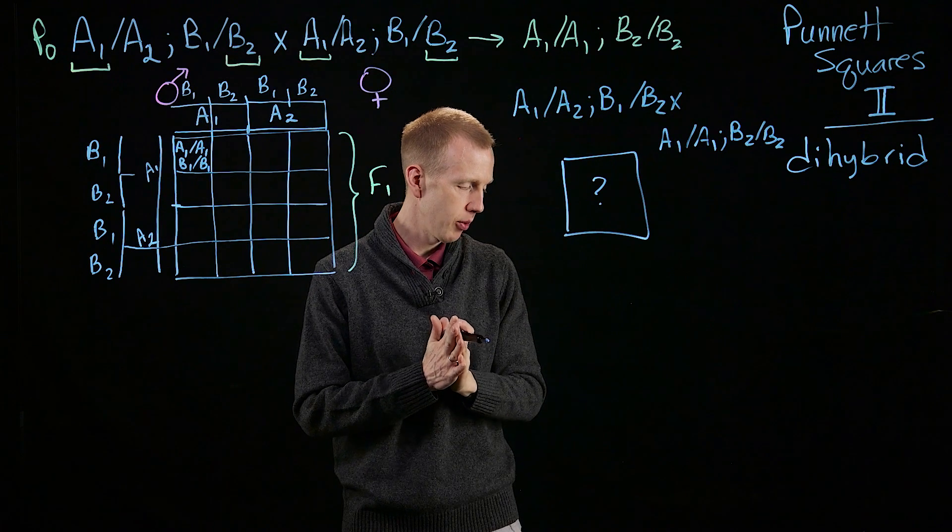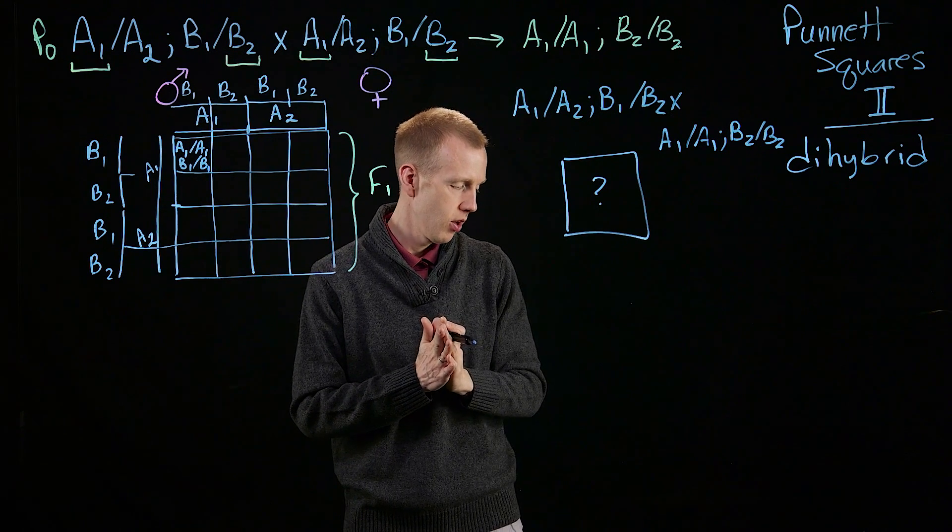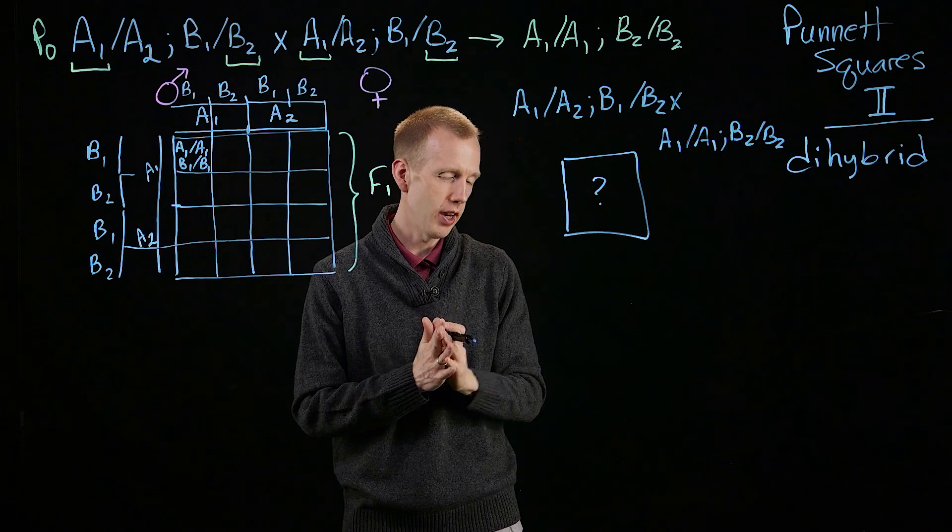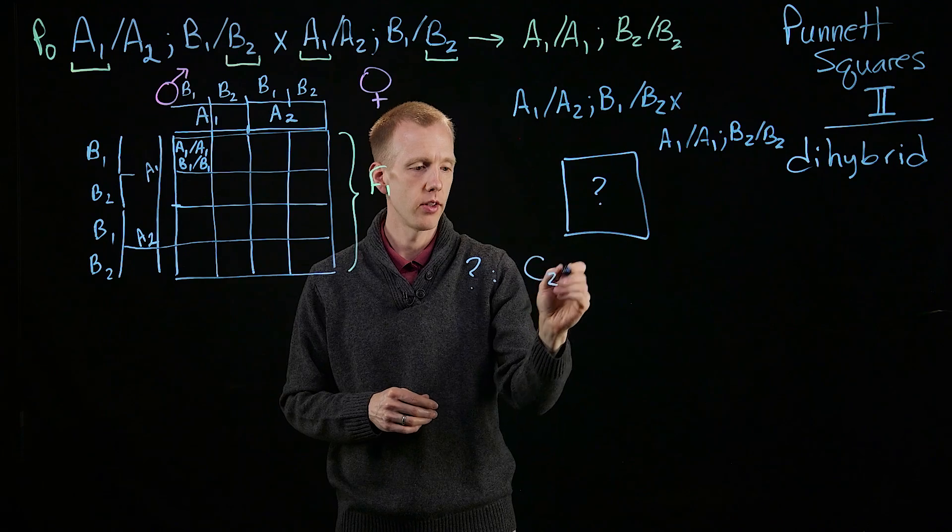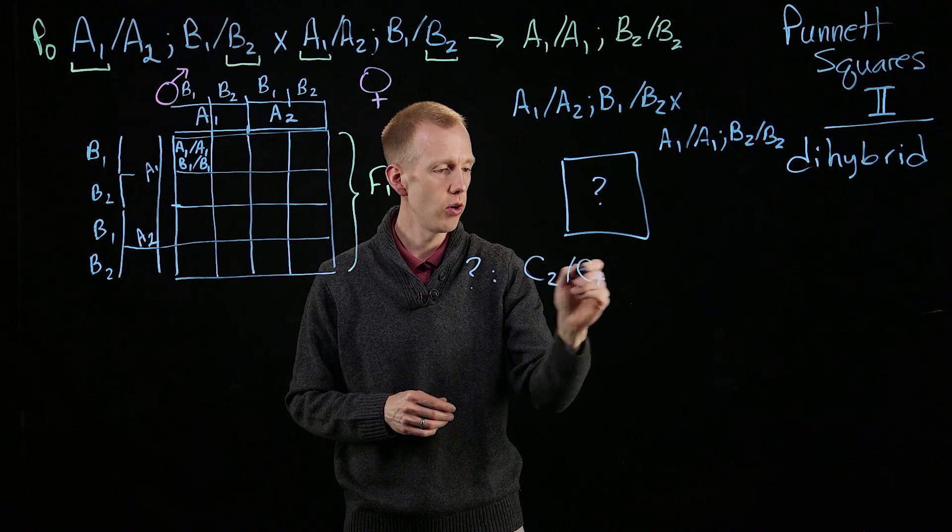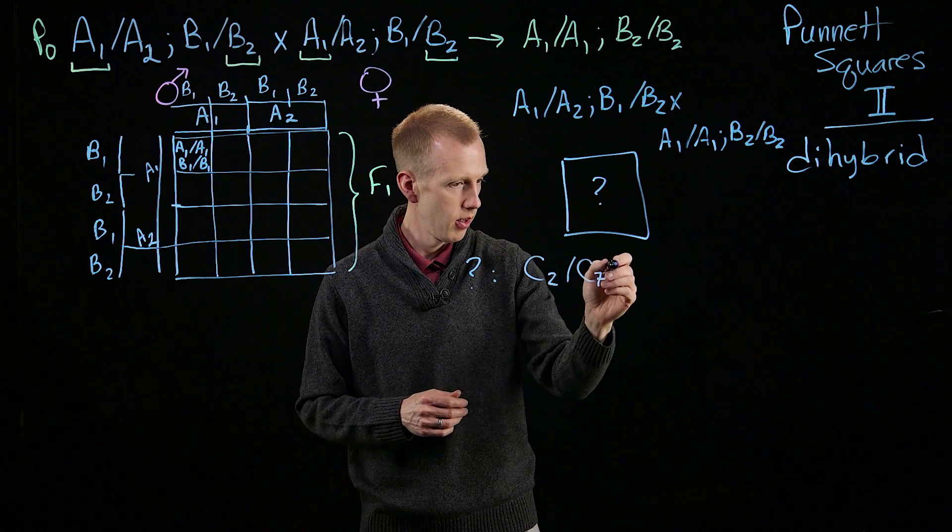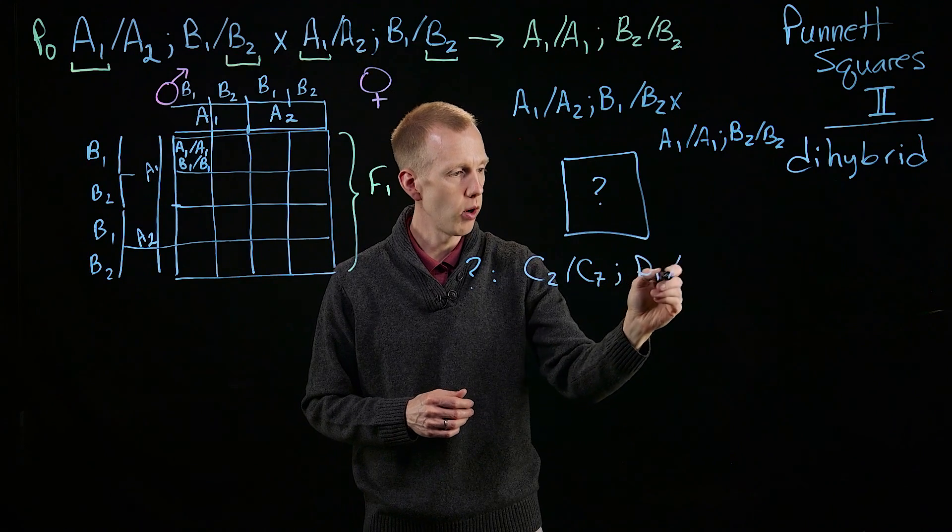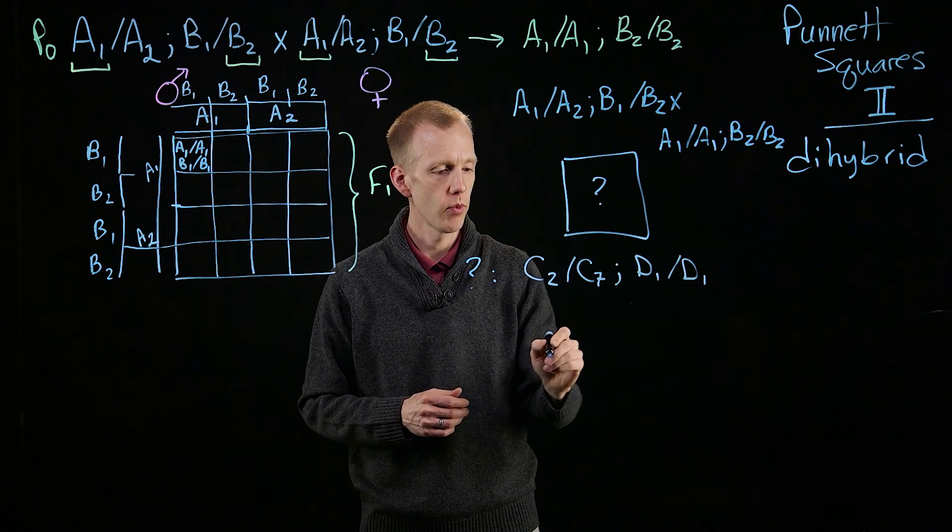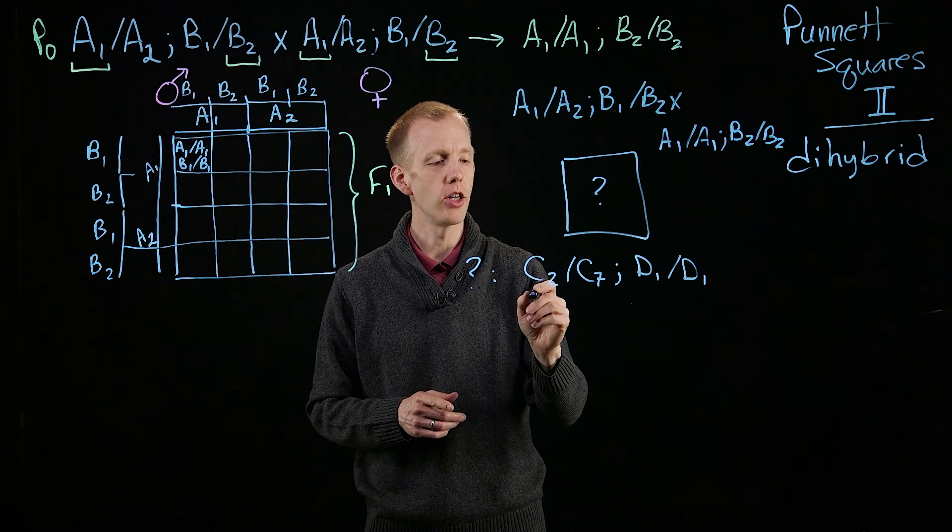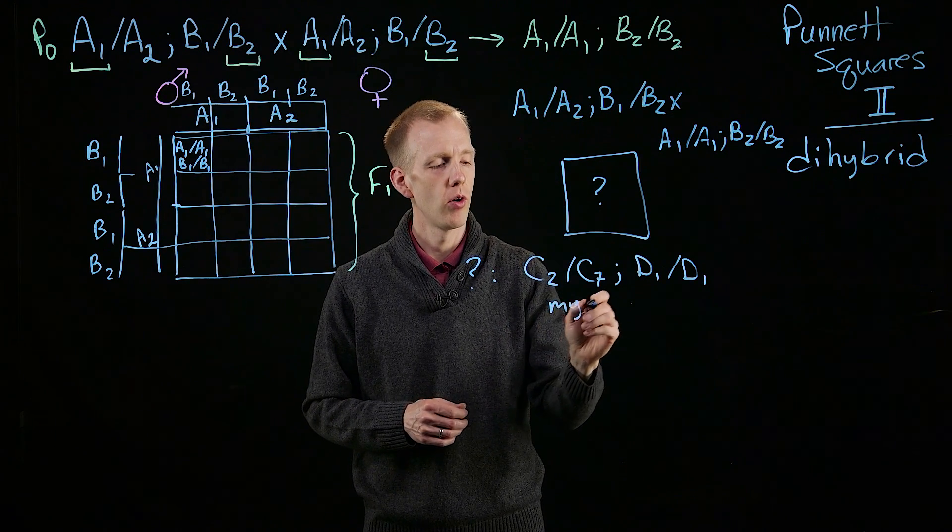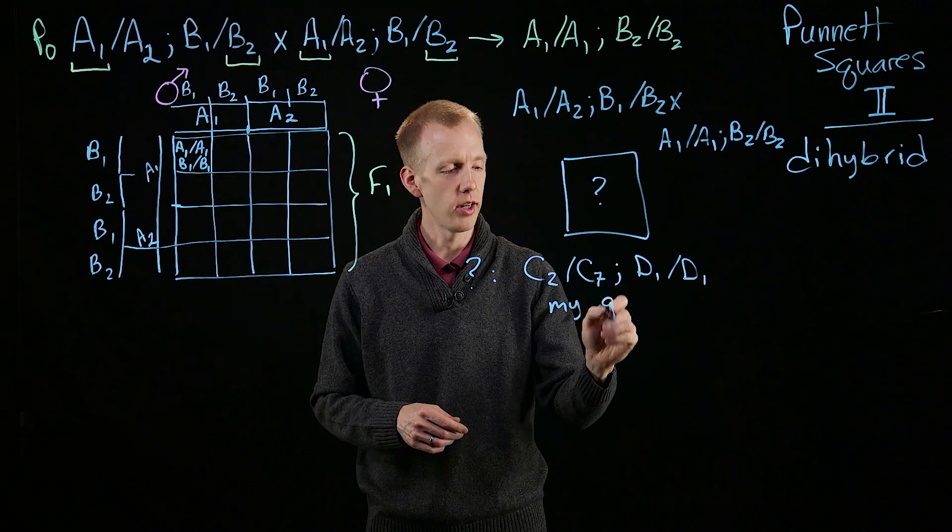Finally, a couple other questions. If my genotype was C2 over C7, and D1 over D1, what are my parents' genotypes? So see if you can predict, if you know my genotype, what are my parents' genotypes?